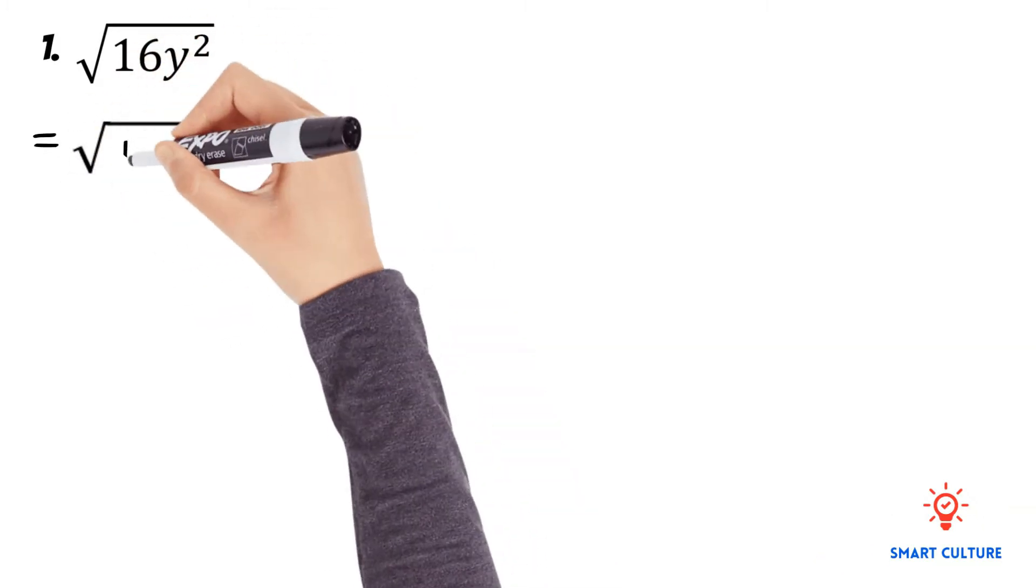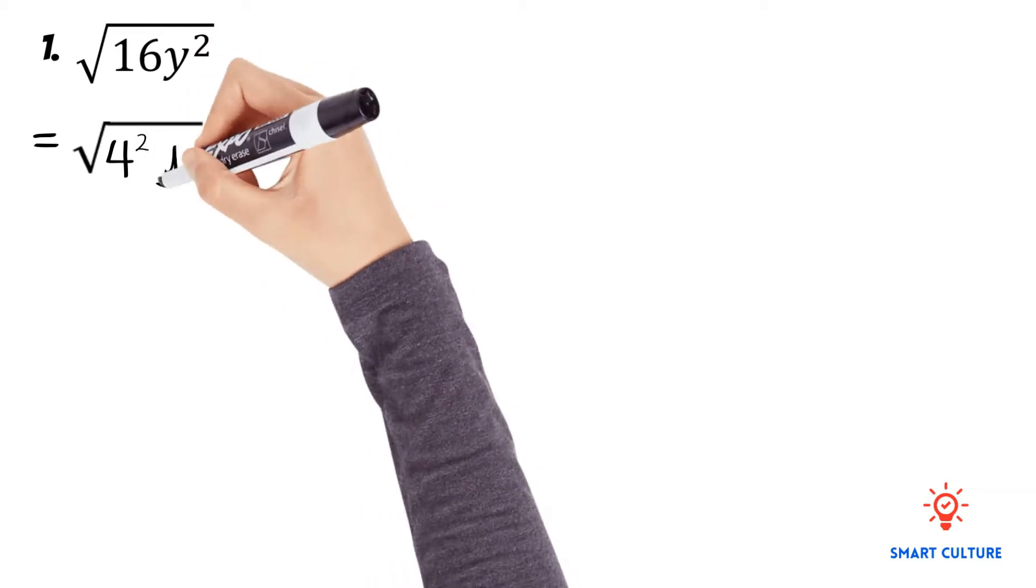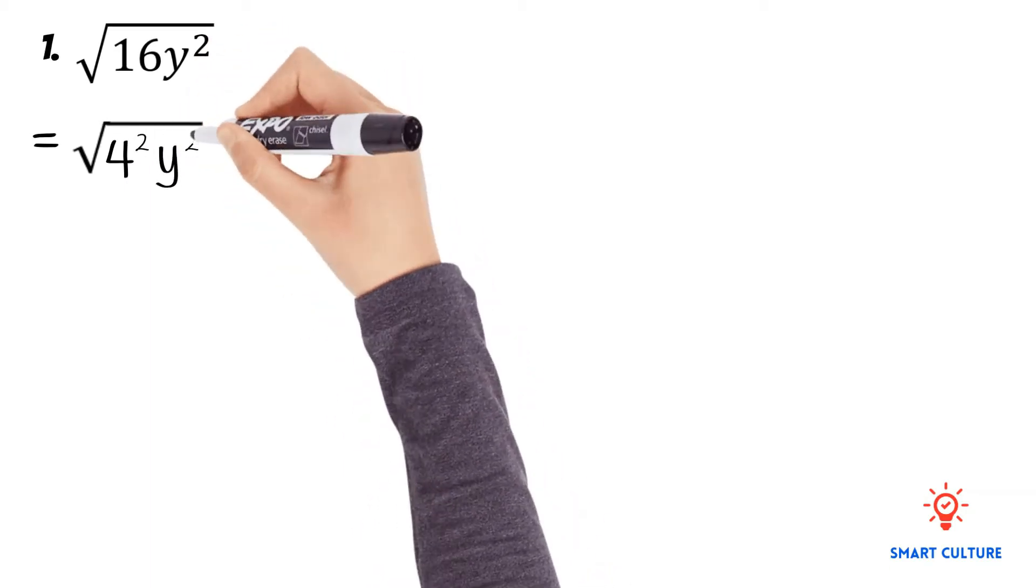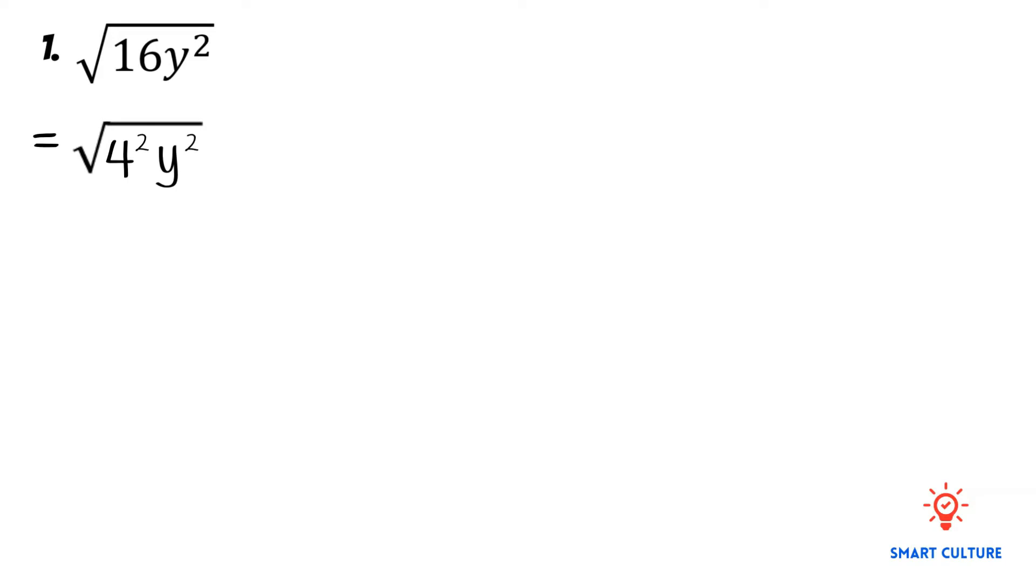What we'll do first is write the number 16 as a product of its factors. So we can write 4 squared. Remember, 4 times 4 is equal to 16.